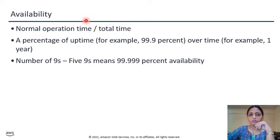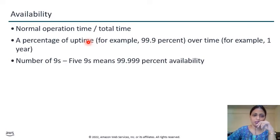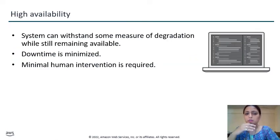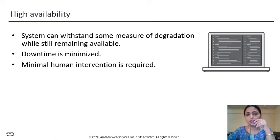What is availability? Availability is the normal operation time expressed as a percentage of uptime. For example, if you use five 9s, that means 99.999% availability. If we use eleven 9s, that means 99.99999999999% availability. It provides high availability with which you can also measure degradation, and in spite of degradation your data remains available. Downtime is minimized and whatever human intervention is needed will be very minimal.